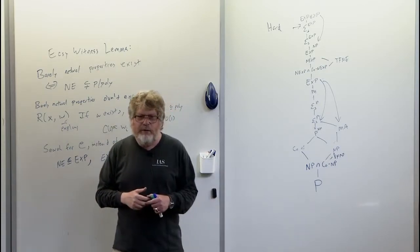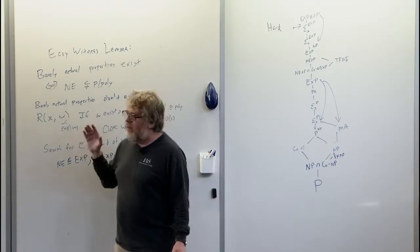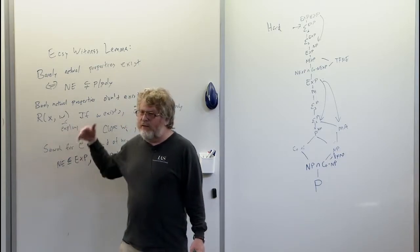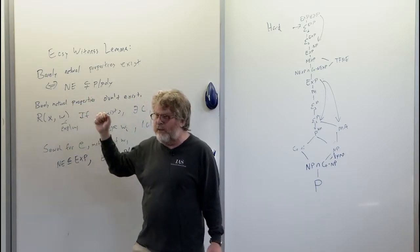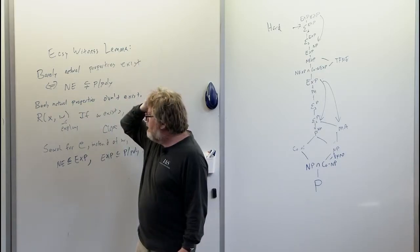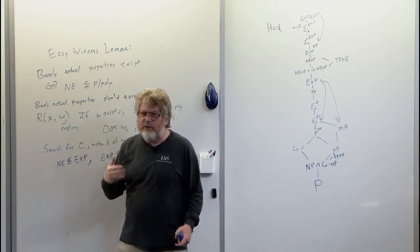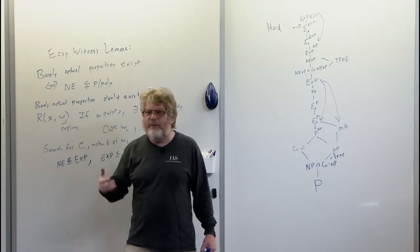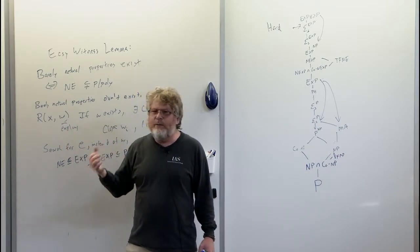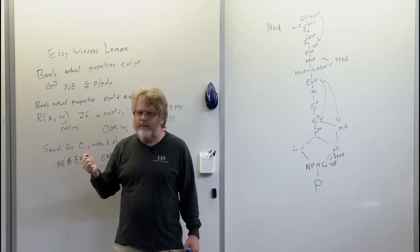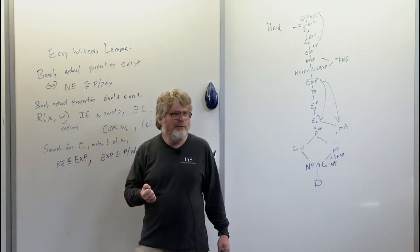I want to leave with an open problem. The open problem: to understand this whole mess we have to go all the way up to non-deterministic exponential time. The question of whether there's a barely natural property is a question about whether search problems at non-deterministic exponential time are simpler than search problems at the NP level.